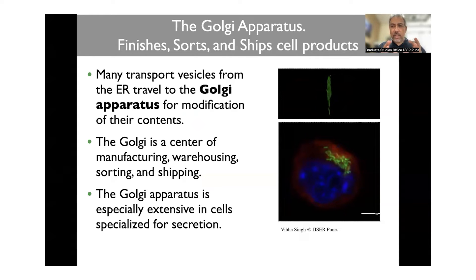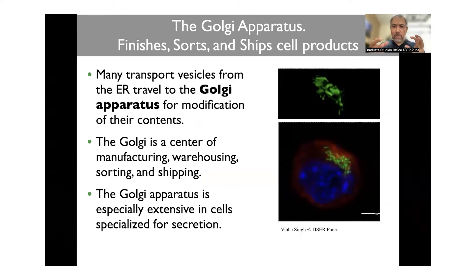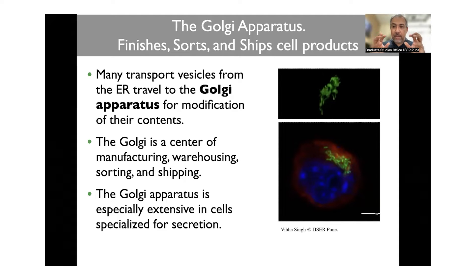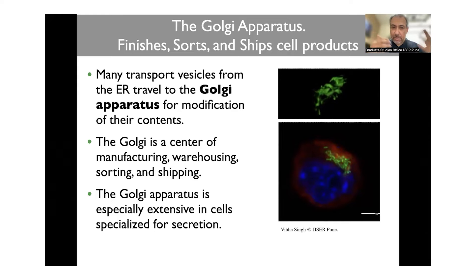The Golgi apparatus lies right next to the ER and does a significant part of the processing — it essentially finishes the protein. It receives the protein in a crude form, decides what else needs to be attached, modifies it to make it fully functional, and then sends it on its way. Transport vesicles from the ER carry components to the Golgi — these are big bags of lipid with proteins either inside or on their membrane — and the Golgi takes up these components and processes them. The architecture of the Golgi is very vital to how this processing takes place.